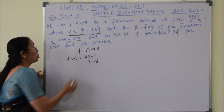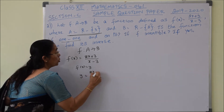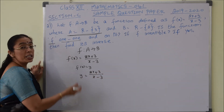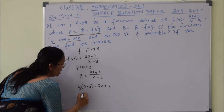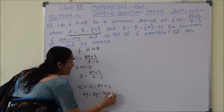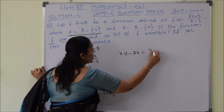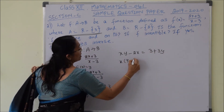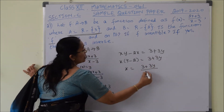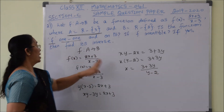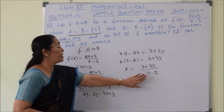To check if f is onto, let y = f(x), so y = (2x+3)/(x-3). Solving for x: y(x-3) = 2x+3, giving xy - 3y = 2x + 3. Bringing x terms to the left: x(y-2) = 3 + 3y, so x = (3+3y)/(y-2). This is defined for all y except 2, which matches set B = ℝ \ {2}.